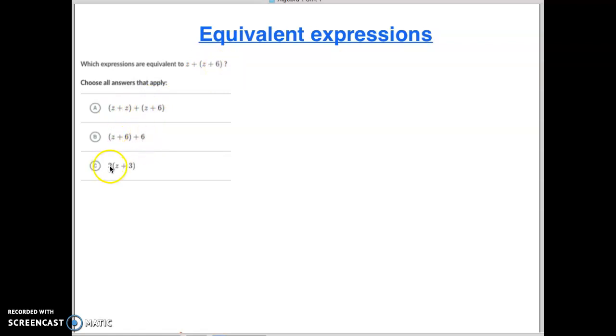Let's see, 2 times z is 2z, 2 times 3 is 6. Hey, this one is our correct answer for that one. Let's do the next one. I need equivalent expressions, and it tells you to choose 2 in this case.